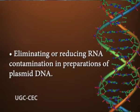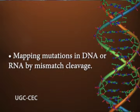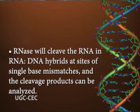Ribonuclease A is an endoribonuclease that cleaves single-stranded RNA at the 3' end of pyrimidine residues. It degrades RNA into 3'-phosphorylated mononucleotides and oligonucleotides. Some of the major uses of RNase A are eliminating or reducing RNA contamination in preparations of plasmid DNA, and mapping mutations in DNA or RNA by mismatch cleavage. RNase A will cleave RNA in RNA-DNA hybrids at sites of single-base mismatches, and the cleavage products can be analyzed.